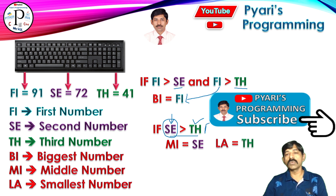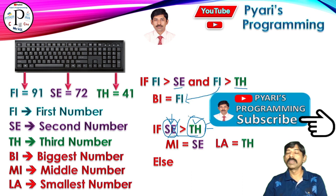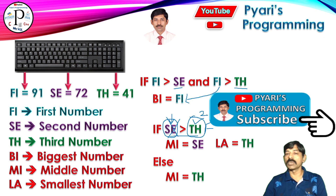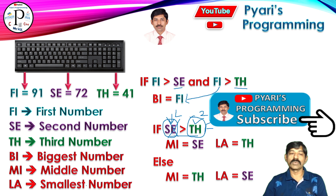Now suppose this is false — that means the second is not my second biggest. Which one is the second biggest? The third one will be my second biggest, so the middle number equals the third one. If this is my second biggest, which one is the last number? The second is my last number, so I will assign second to the last one.